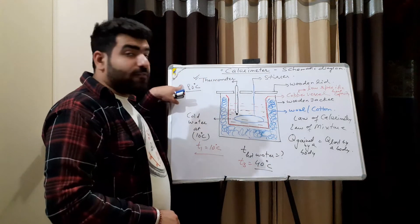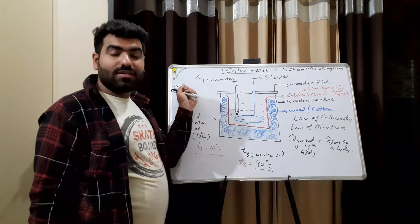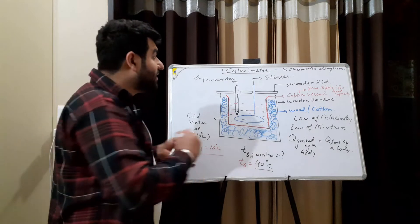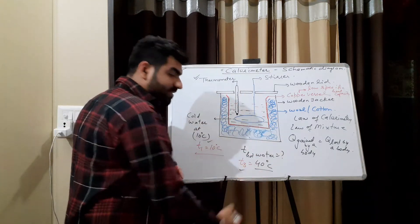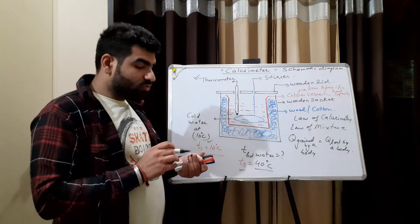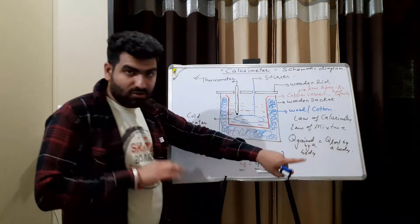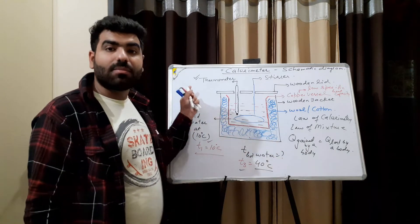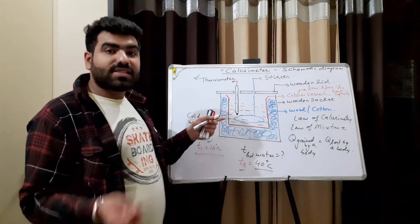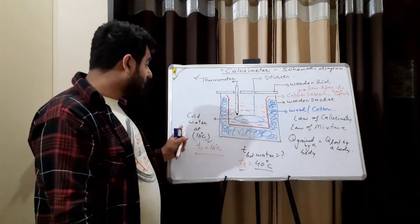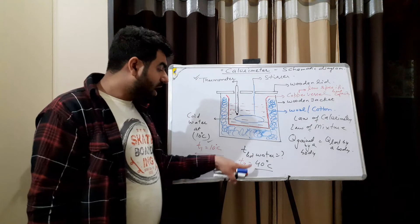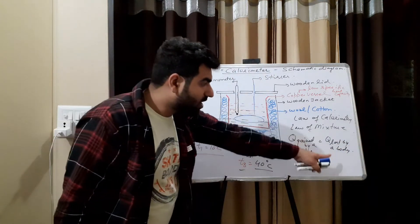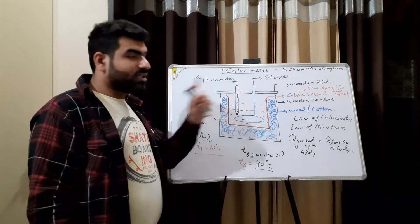We need to find out the unknown temperature of the hot water. The calorimeter gives us T1 and T3 as readings. By using the law of calorimetry — heat gained by a body equals heat lost by a body — we can find that unknown temperature. Sometimes in numerical problems, two values are given and we have to find the third using the same formula.